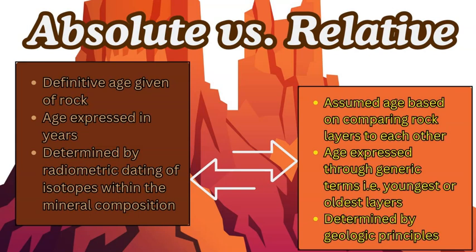We look at an isotope — an element within the mineral, within the rock — which undergoes radioactive decay. Over time the atom breaks apart slowly. Half of the element will break down over a certain time, which is called the half-life. The parent isotope will turn into the daughter isotope, and we can calculate the ratio and then work backwards to figure out the exact age within a very small margin of error.